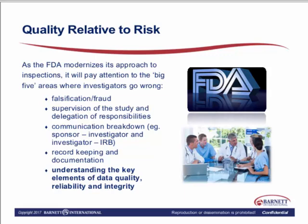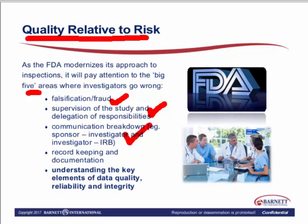The FDA has also looked at quality relative to risk. As the FDA modernizes its approach to inspections, it's going to pay particular attention to the big five areas where investigators go wrong: falsification or fraud in the data; how they supervise the study and delegation of responsibilities to staff; breakdown of communication between the sponsor, the investigator, and the IRB; record retention and maintaining records and documentation; and understanding the key elements of data quality — reliability, integrity, and the ability to reproduce this data.